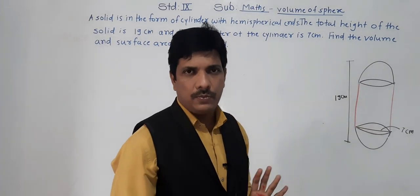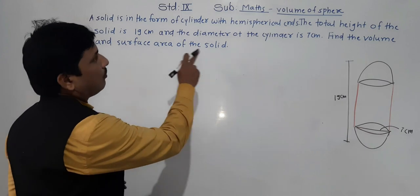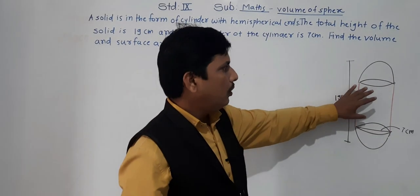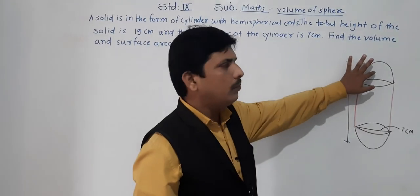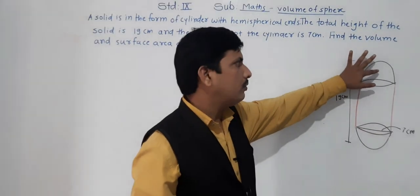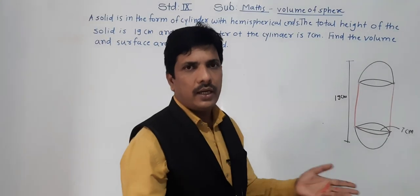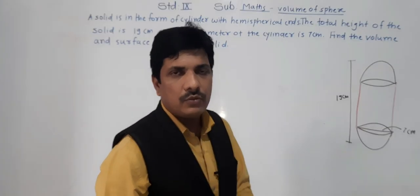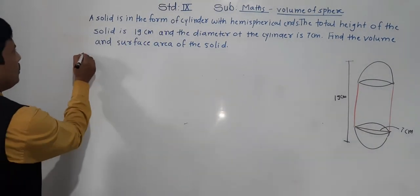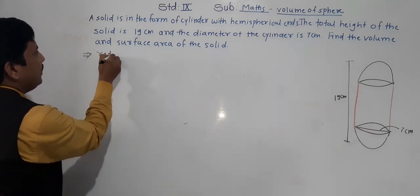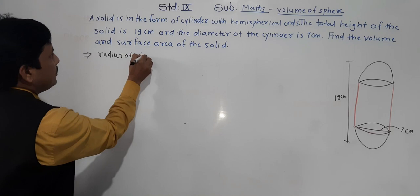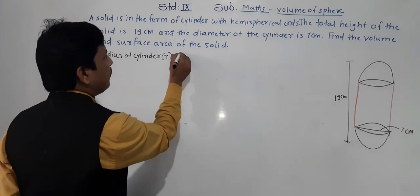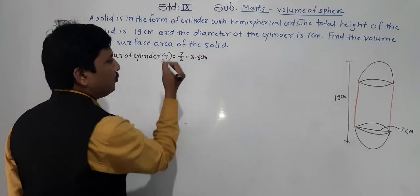There is a cylinder and two hemispheres. To find the volume of the whole solid, we find the volume of the cylinder plus the volume of the two hemispheres. Since both ends are identical, we find the volume of one hemisphere and multiply by 2. Radius of cylinder r = 7/2 = 3.5 cm. Now we need the height of the cylinder. The total height given is 19 cm.